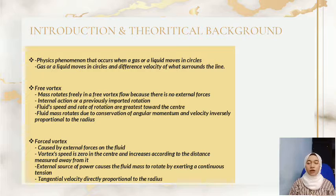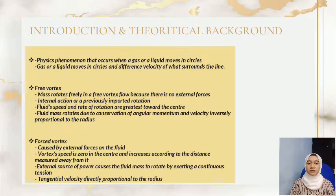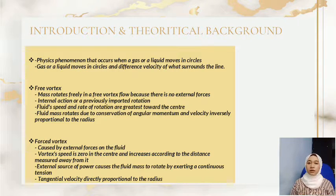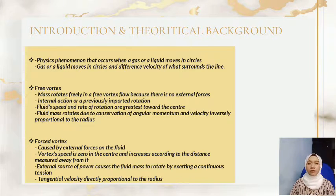The forced vortex motion is caused by external forces on the fluid — for example, the impeller of a pump. In this experiment, the forced vortex flow is created by using the rotative plate with the addition of a pedal. The forced vortex speed is zero at the center and increases according to the distance measured away from it. An external source of power causes the fluid mass to rotate by exerting a continuous tension on it, causing it to revolve at a constant angular velocity. The tangential velocity is directly proportional to the radius.